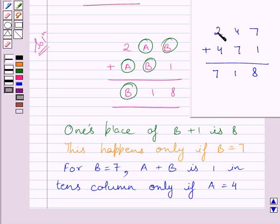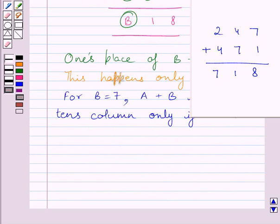So adding 1, 2, and 4 we get 7. So the values of A and B are 4 and 7.